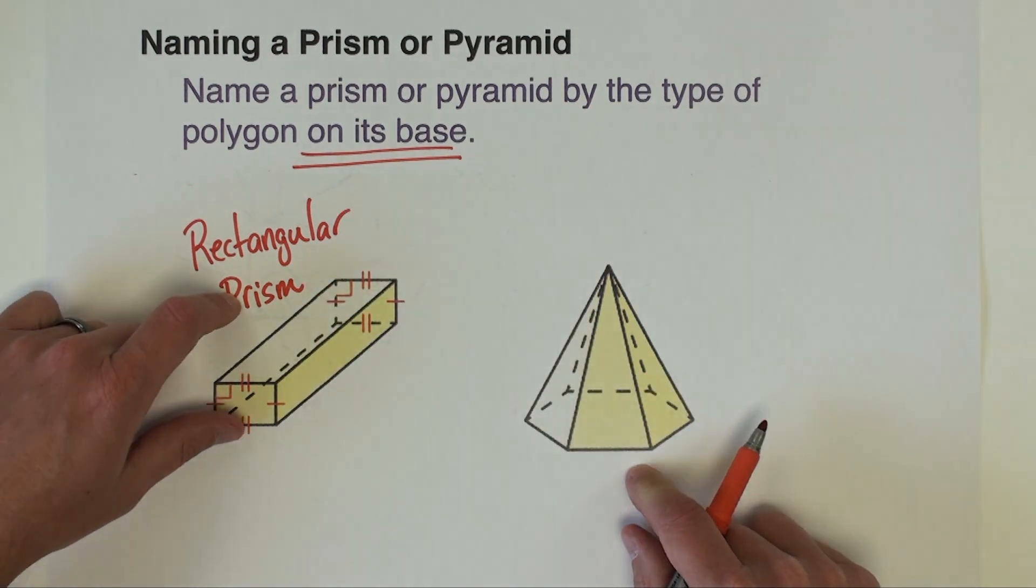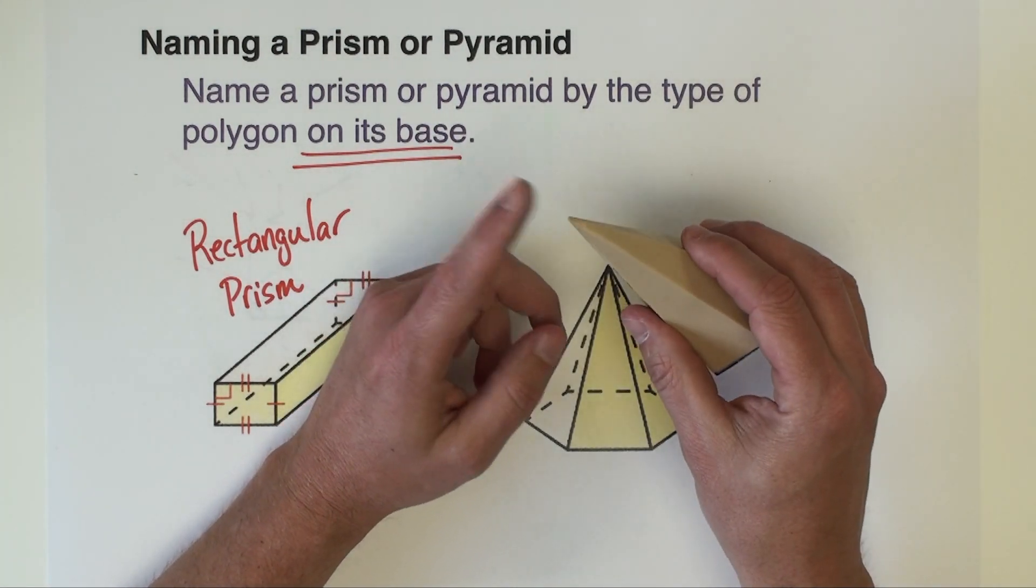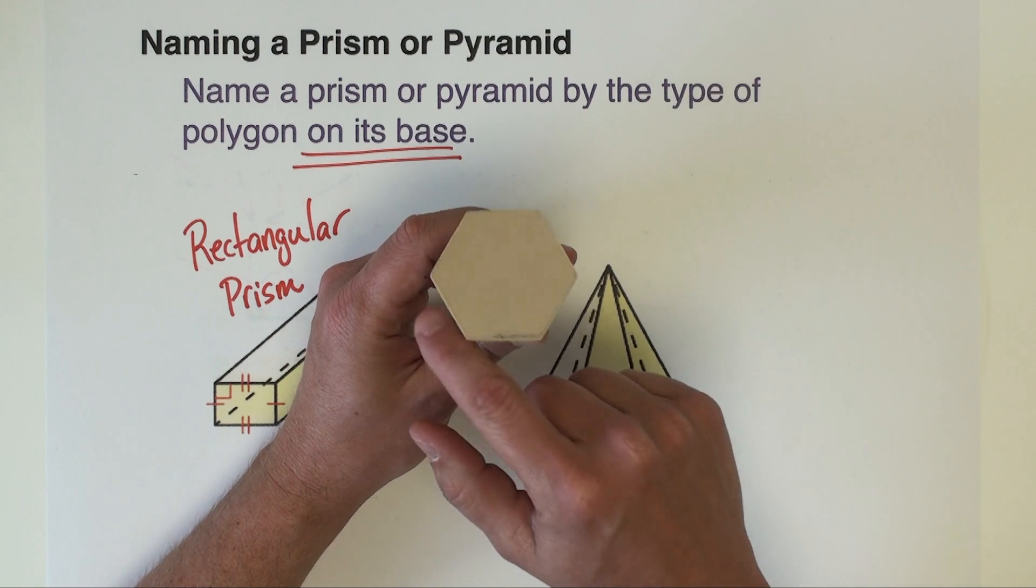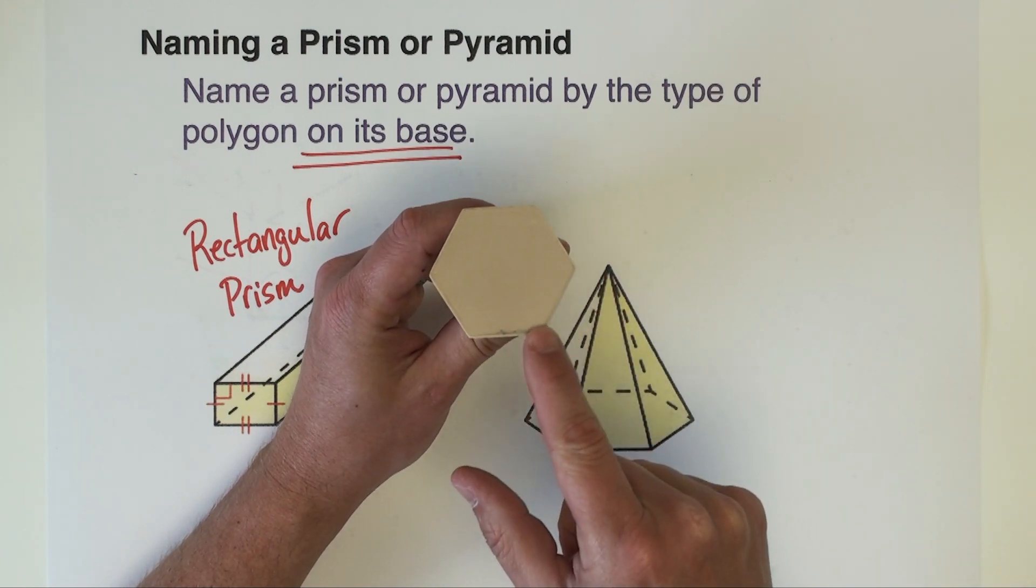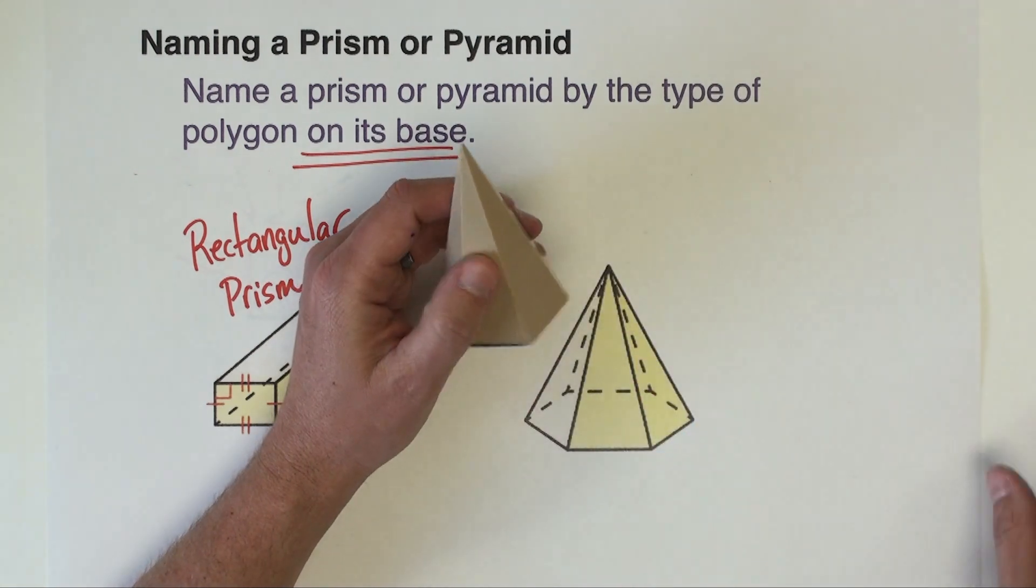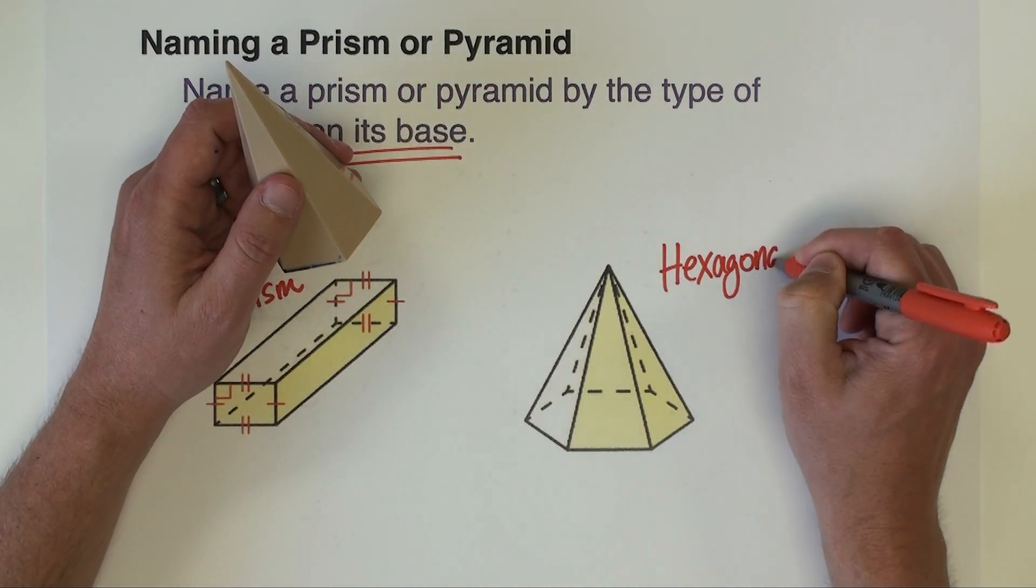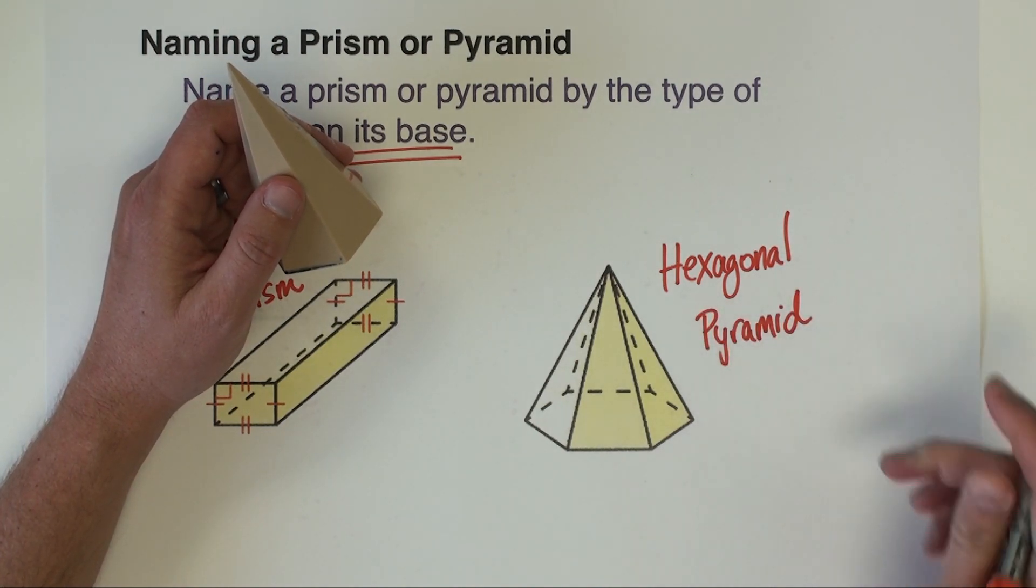Okay now over on the next one. So we're looking at something like this. It is a pyramid. Got a point on top. The base of that pyramid though if you look at the figure on the paper or the one in my hand. The base of this pyramid has six sides. Because it has six sides I'm going to call this a hexagonal pyramid.